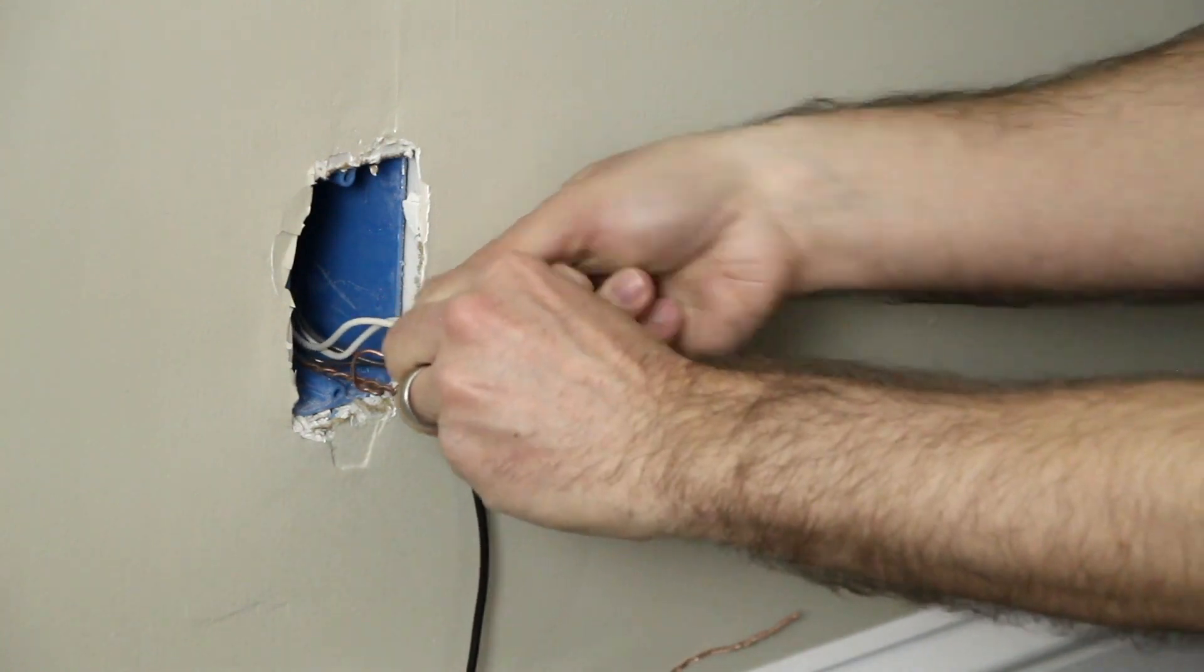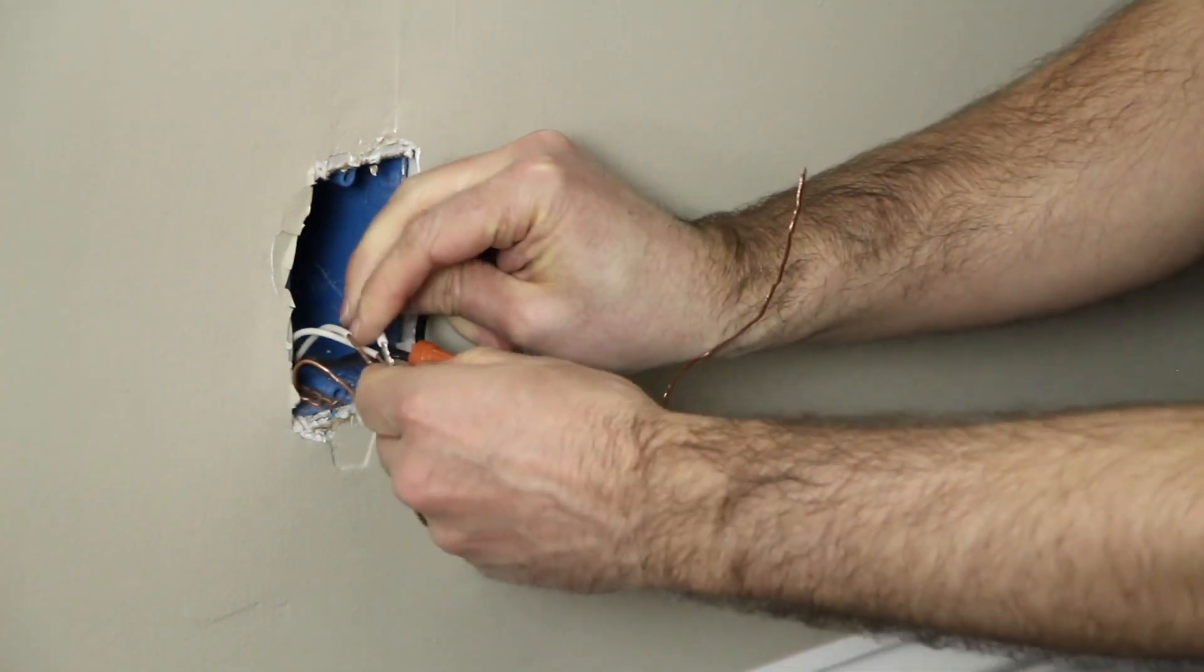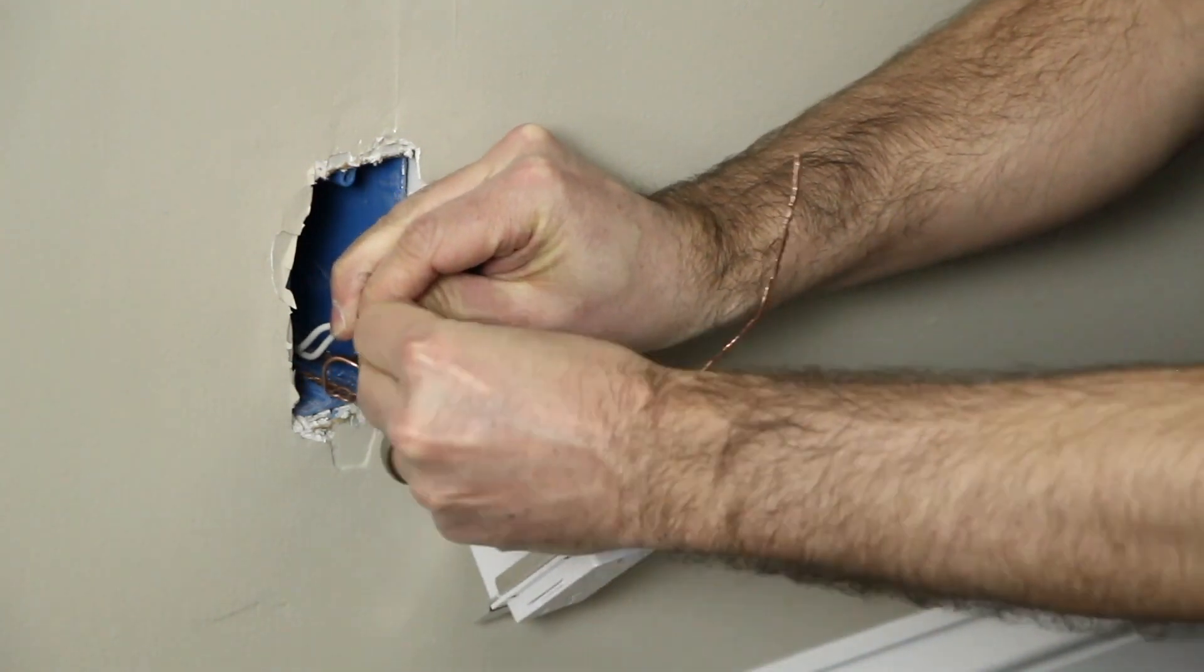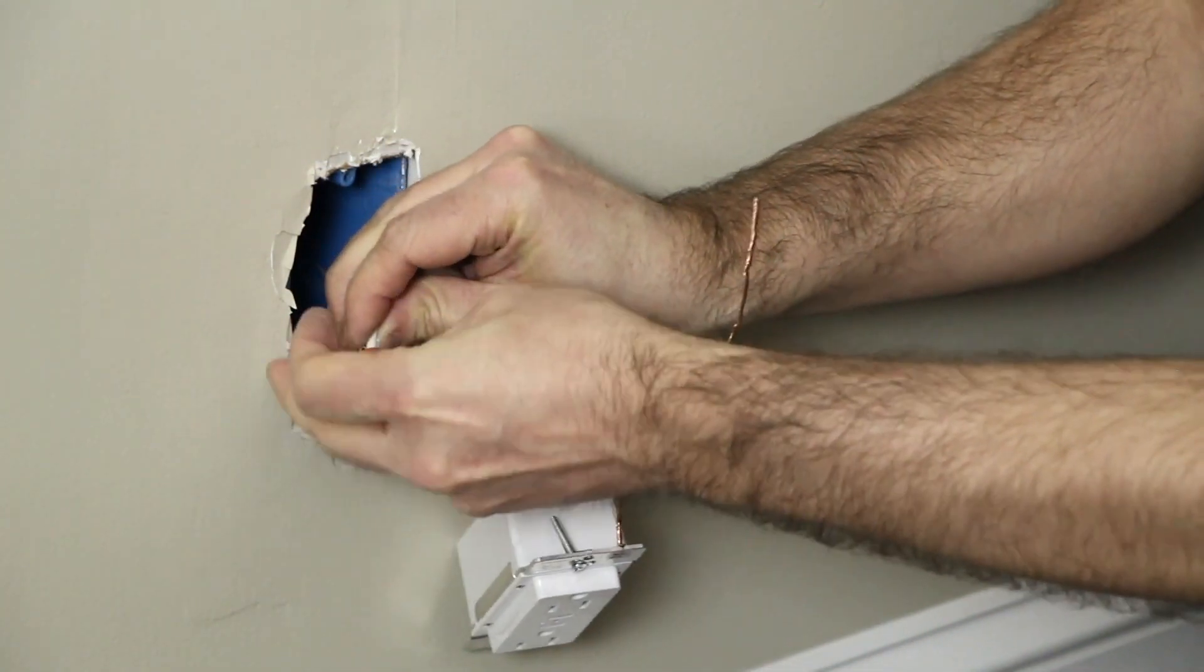Next, connect the white wire on the iDevices Wall Outlet to the neutral wires, which are usually white, with the provided wire nuts. If there are multiple white wires, cap them all together.